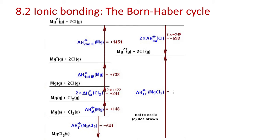Let's start with the Born-Haber cycle. This cycle has a few different utilities. One of them is that if you start with the idea of elements in their standard state — magnesium solid and chlorine gas — you might ask why would they ever form an ionic compound. The answer, or at least some support for why they form this compound, is this negative 641 kJ/mol to form MgCl2 solid, so it's exothermic to make this ionic compound. If MgCl2 were endothermic, this probably wouldn't have been made as a stable compound.